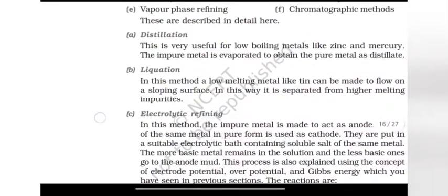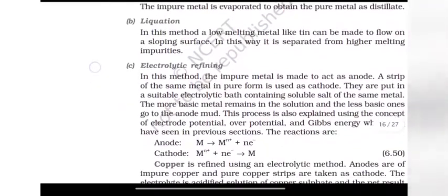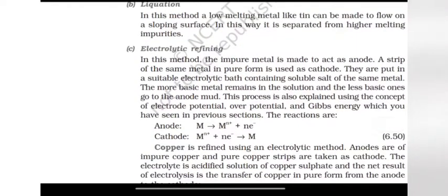Liquation. In this method, a low melting metal like tin can be made to flow on a sloping surface. In this way, it is separated from higher melting impurities.